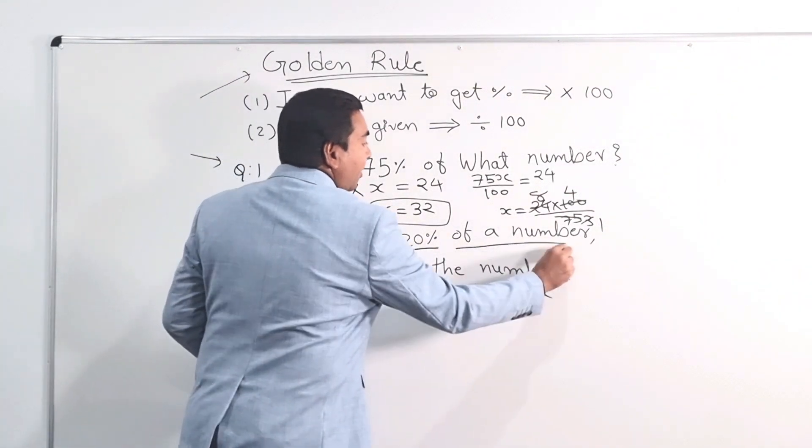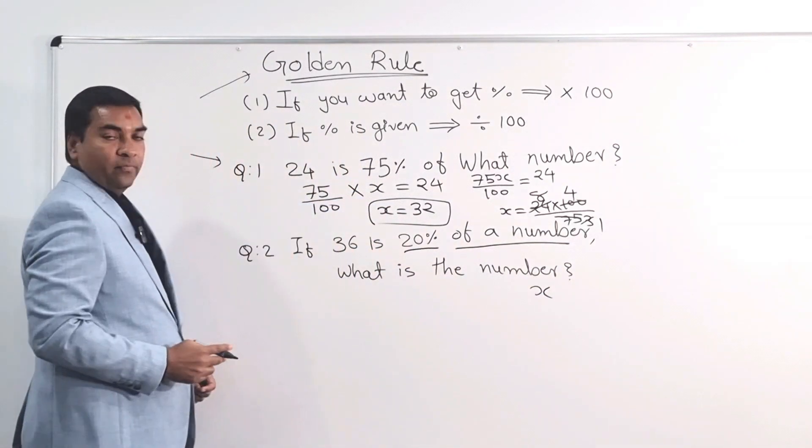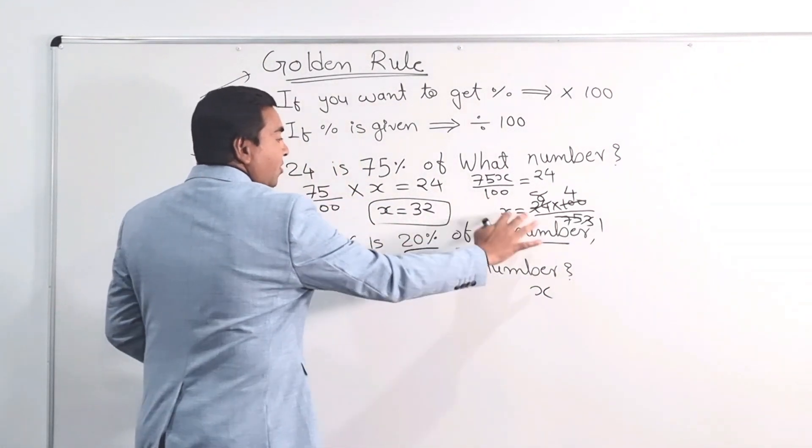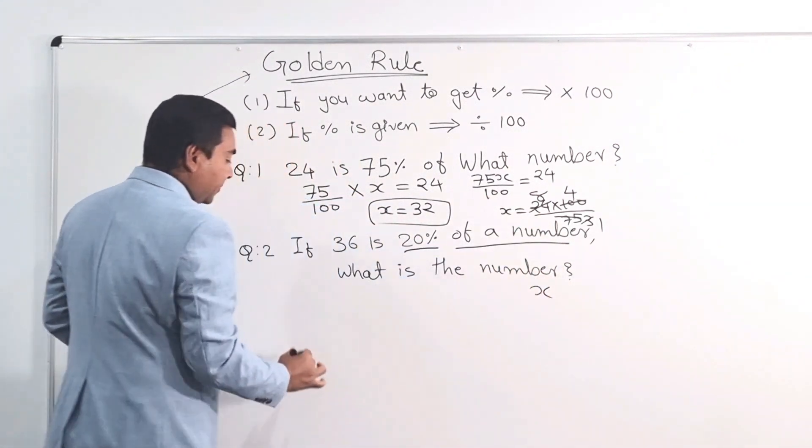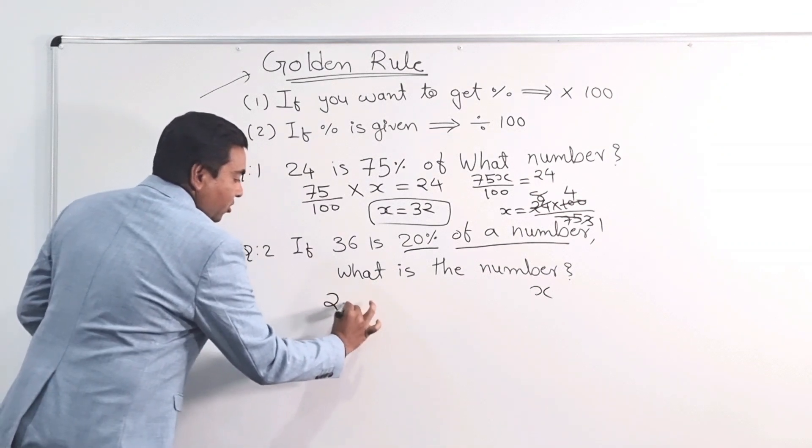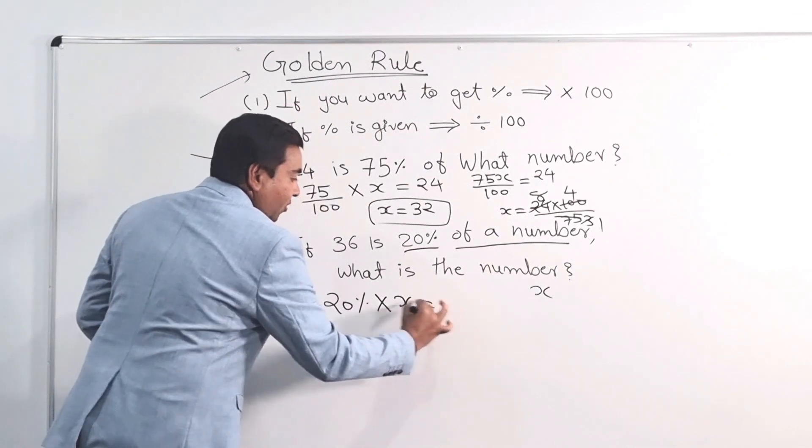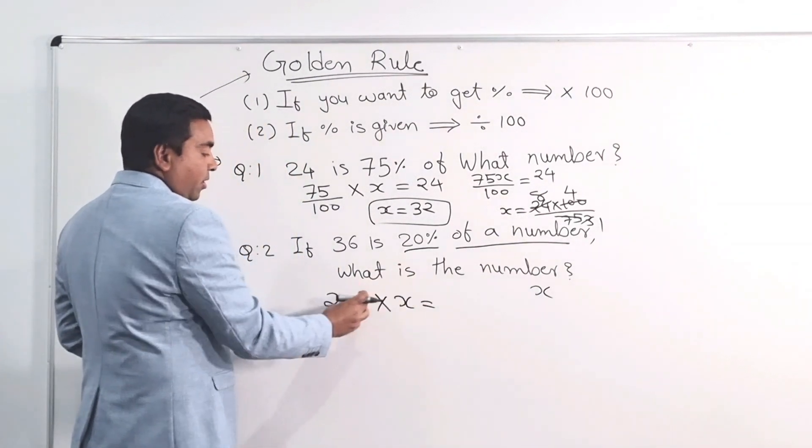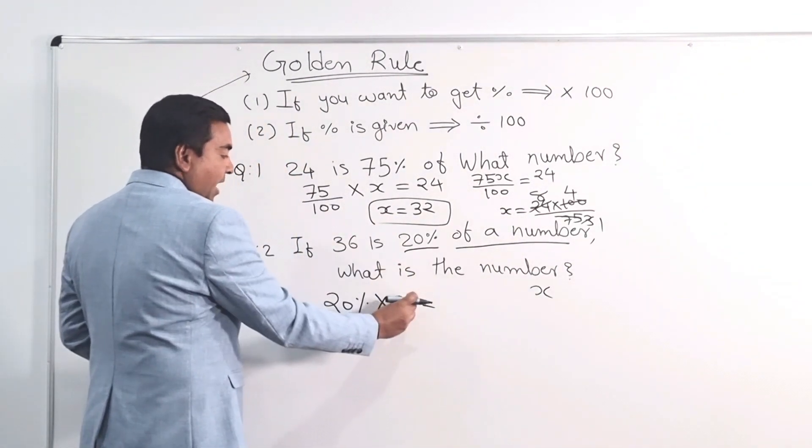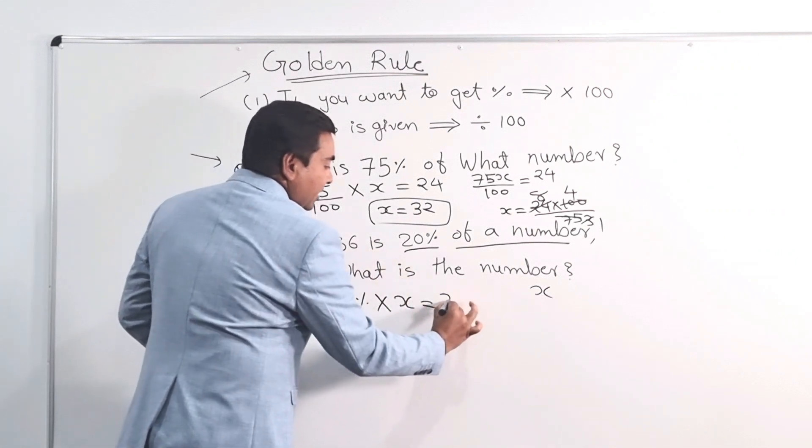Now, 20% of a number is 36. So 20% of a number, number is X. So 20% multiply by X equal to, 20% of a number, 20% multiply by X equal to 36.